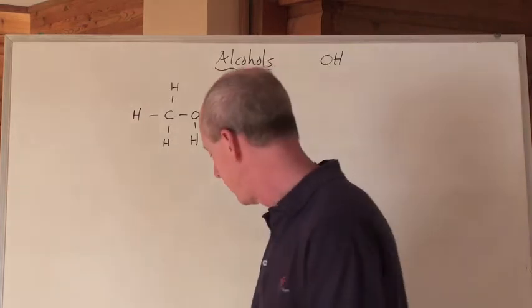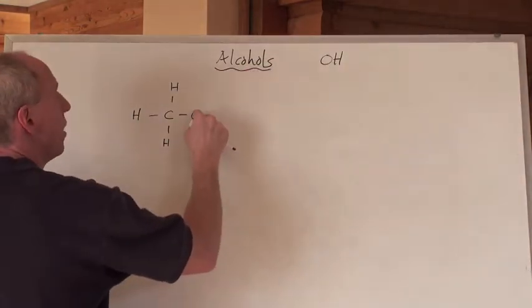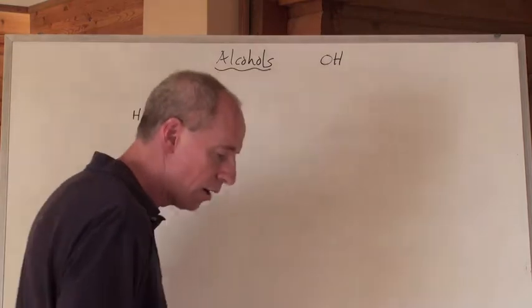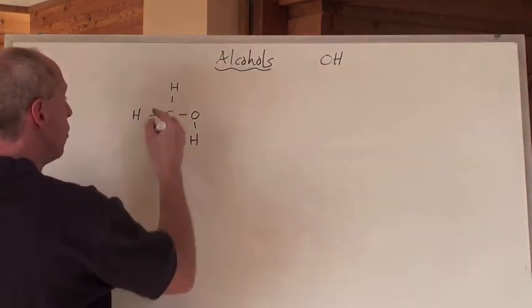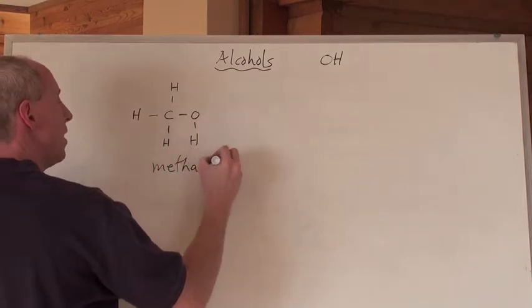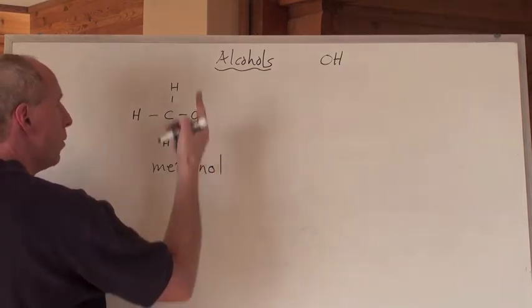Sometimes you're going to see that, or sometimes some people are just going to write an OH and not even put the H bonded on there with a line. So what do you call that right there? That's a meth, and it used to be methane, but we drop the E and add the OL and we get methanol.